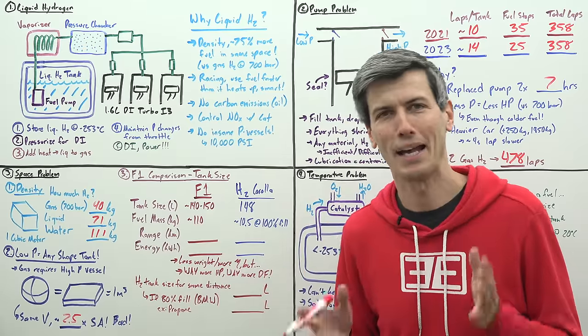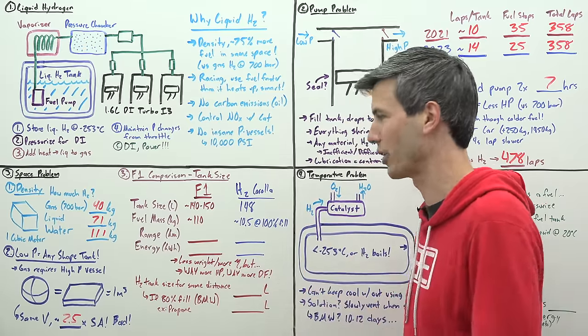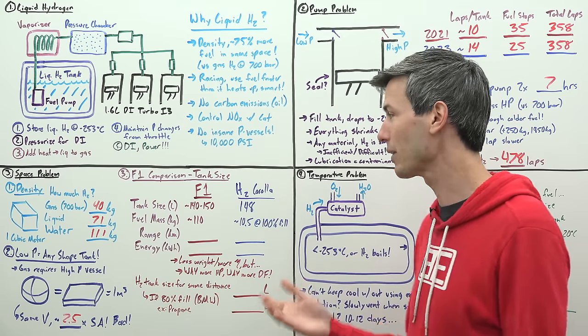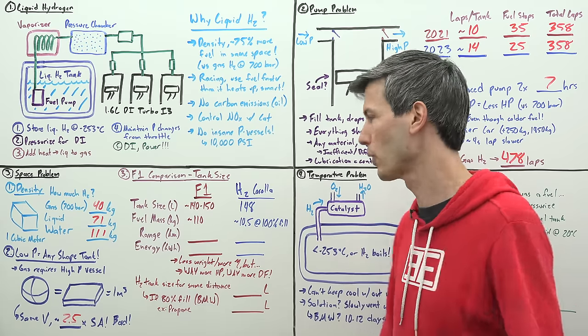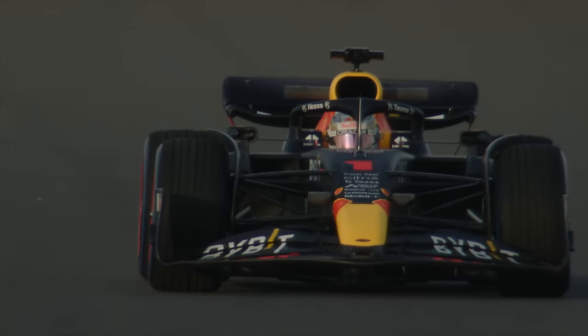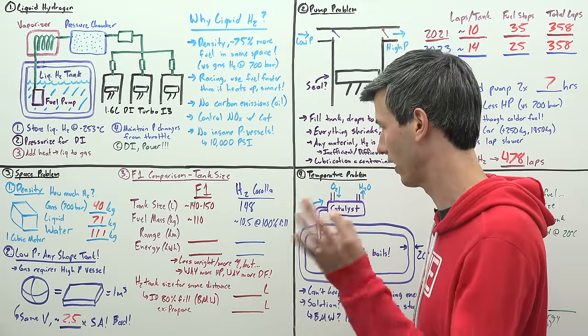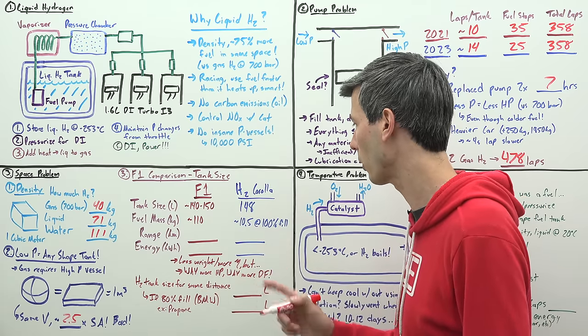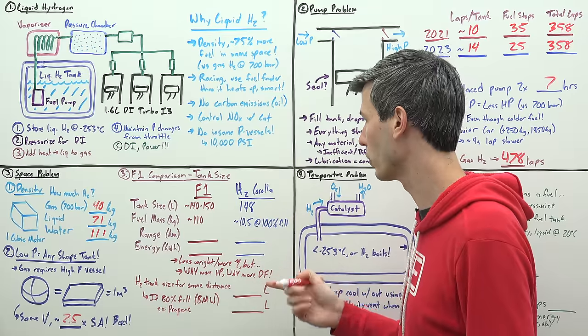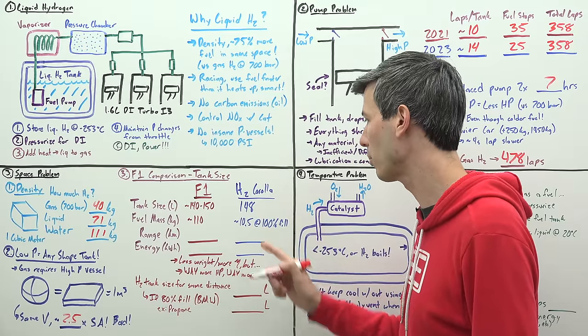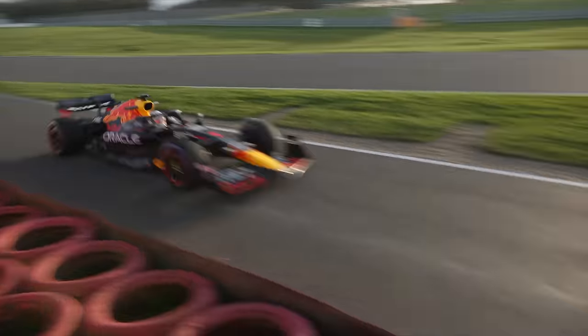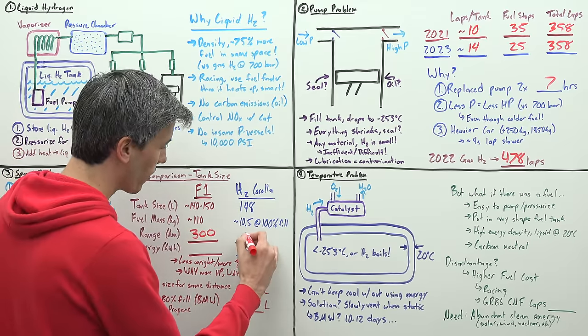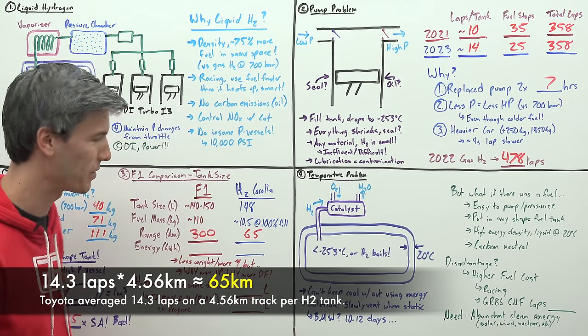That's not even the biggest problem with the space issue. To understand this, we're comparing our hydrogen Corolla to a Formula 1 car. Both have about the same fuel tank size: for the hydrogen Corolla it's 148 liters, and an F1 is somewhere around 140 to 150 liters, so we'll say they have the exact same tank size. The fuel mass in Formula 1 is 110 kilograms. In the hydrogen fuel tank, if you completely fill it, you'd be at about 10.5 kilograms of hydrogen. The range of an F1 car with a full tank is about 300 kilometers. The range of our liquid hydrogen Corolla while traveling on the track is about 65 kilometers. This is pitiful.